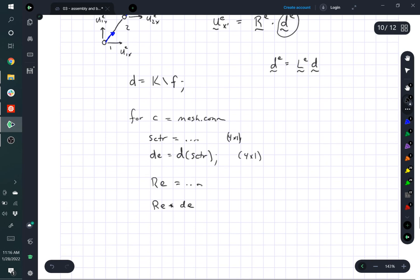And then all you have to do is just multiply RE times DE. And just to check the size of these, right, RE is defined as a 2 by 4. And DE is a 4 by 1.